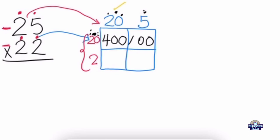We tick that off to say we're finished there. Now we multiply 20 again by 2. We have a zero here, so we put 0, then 2 times 2 is 4, giving us 40. We're finished with that. Now 5 times 2 is 10.